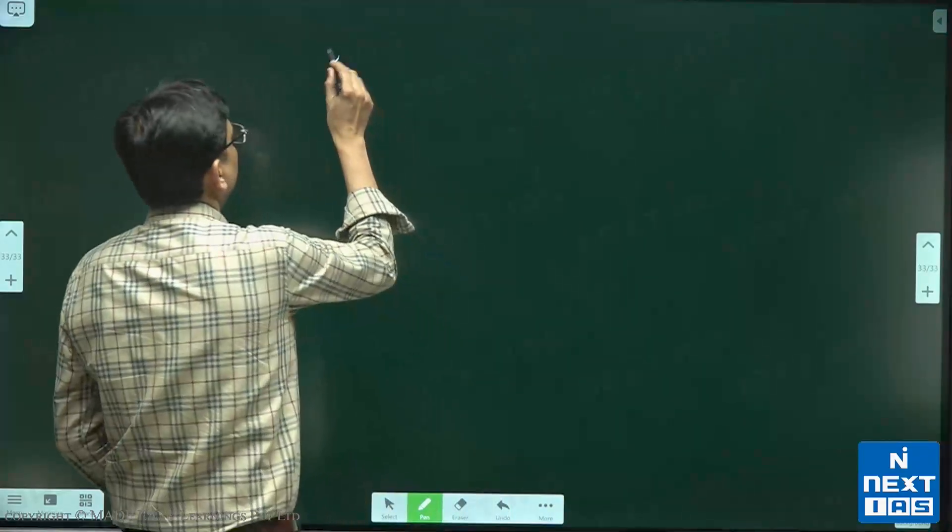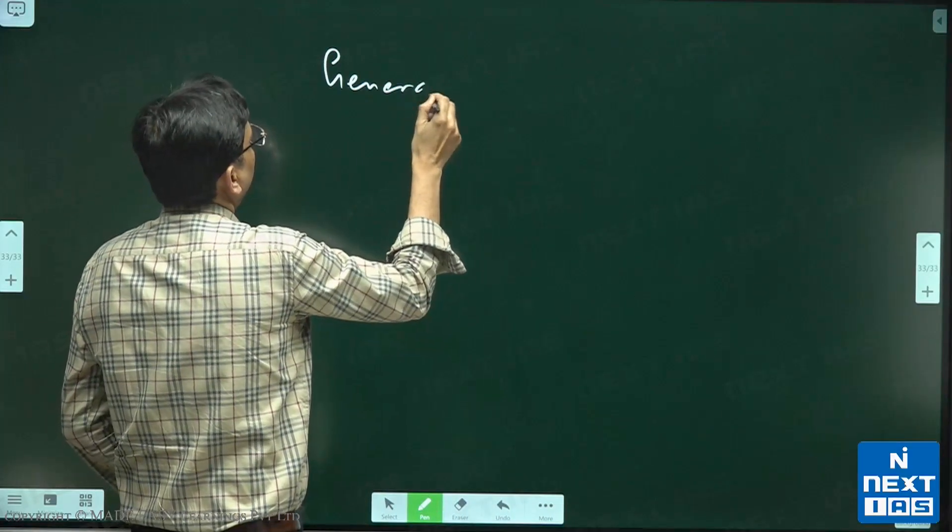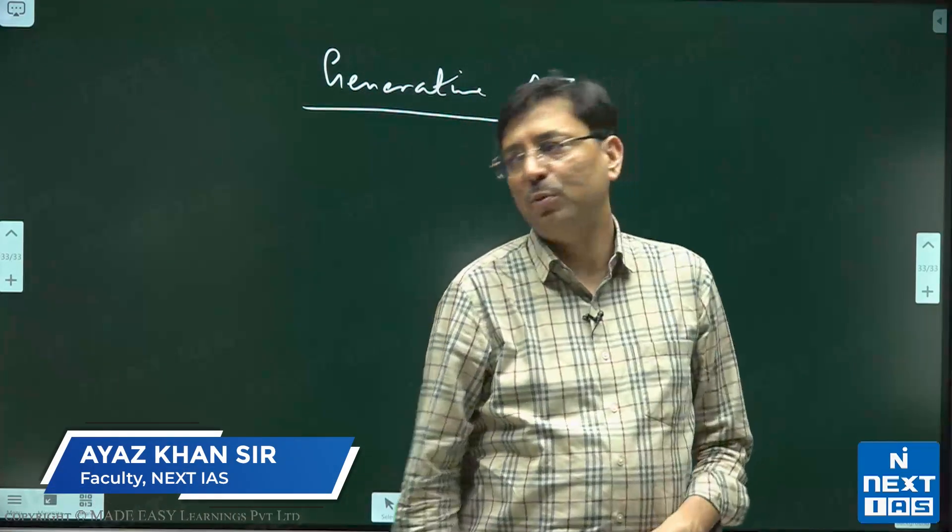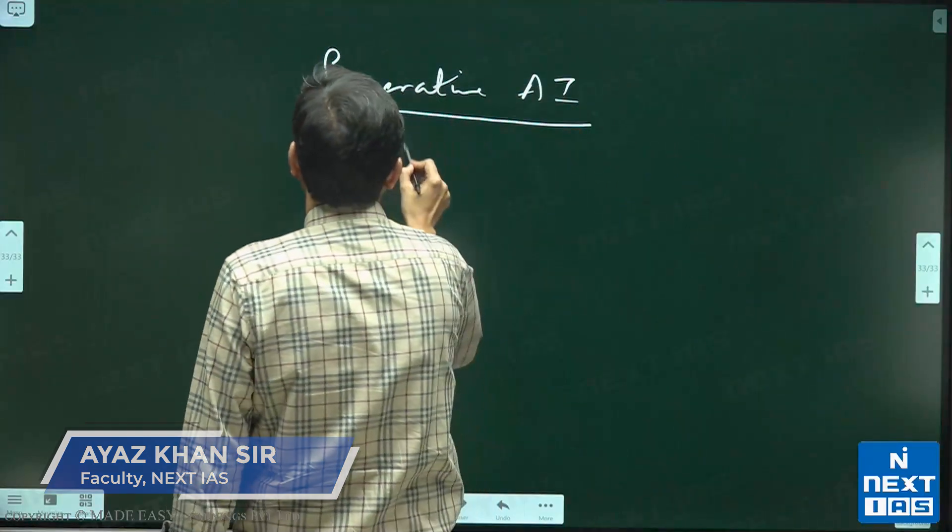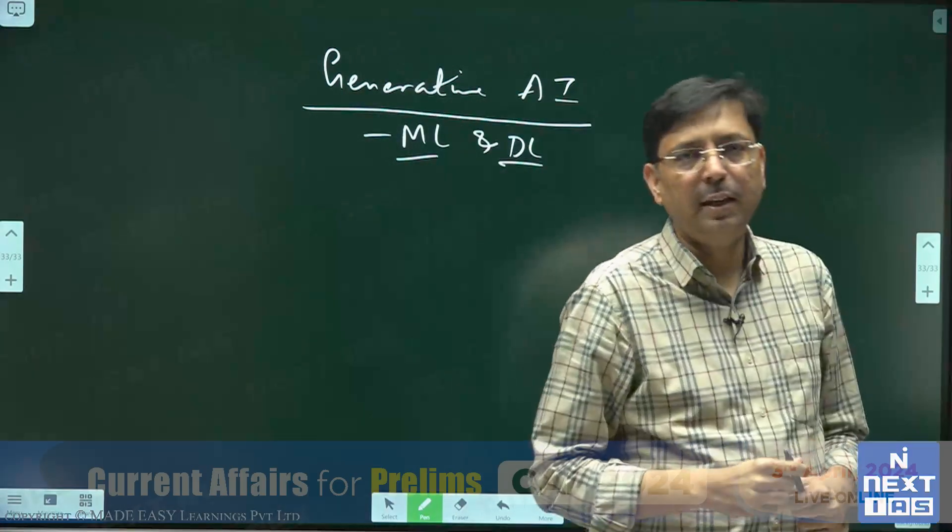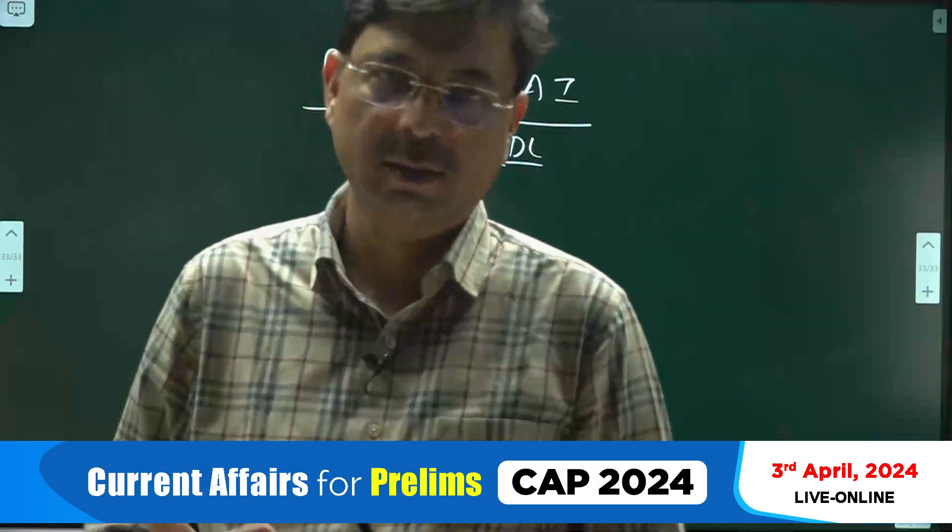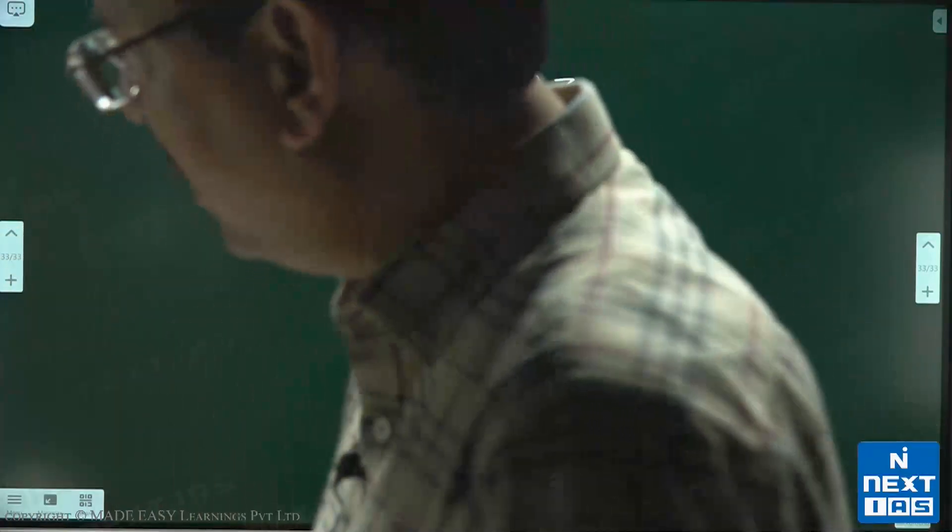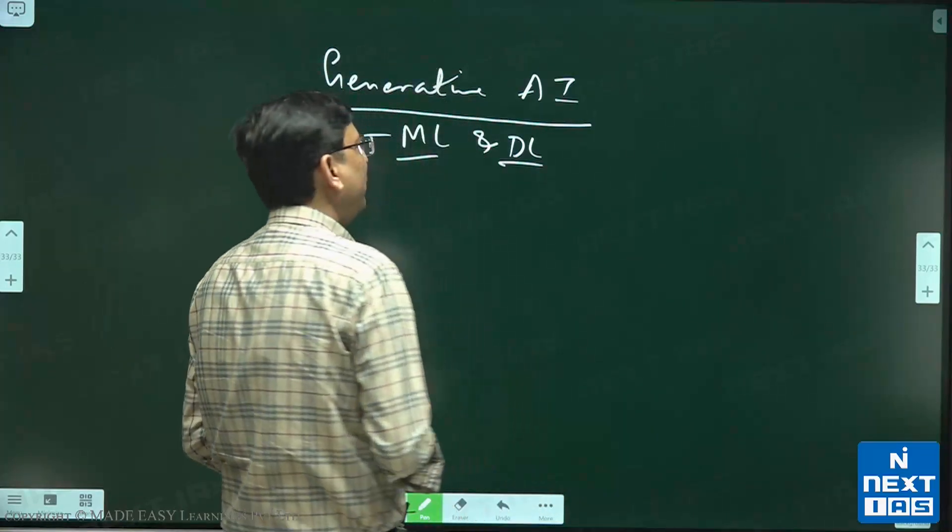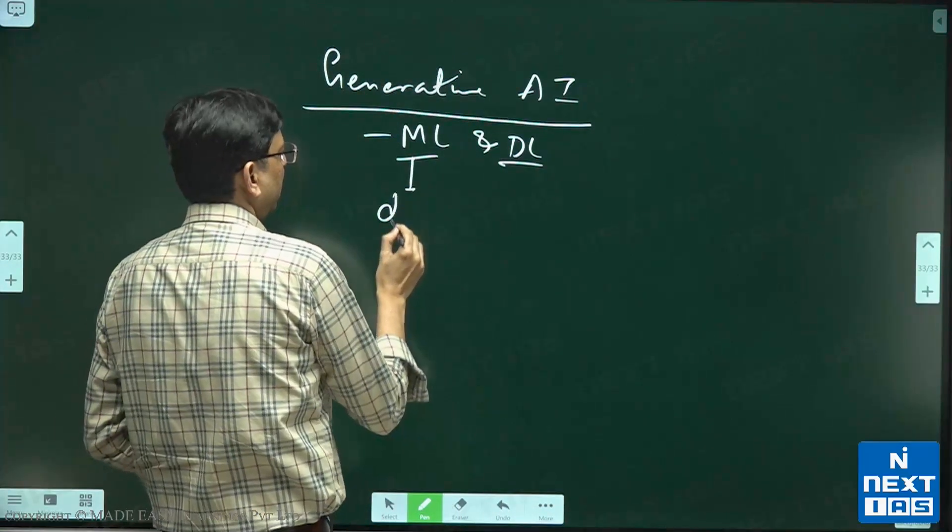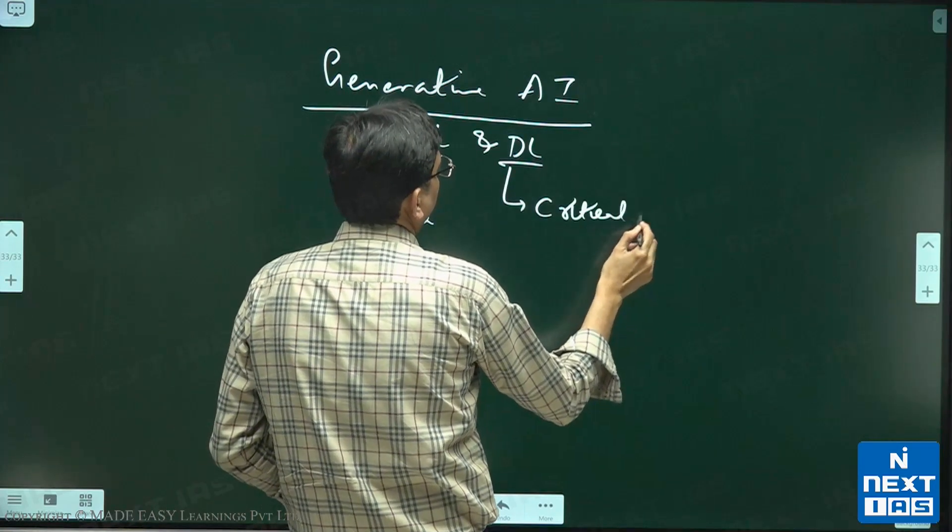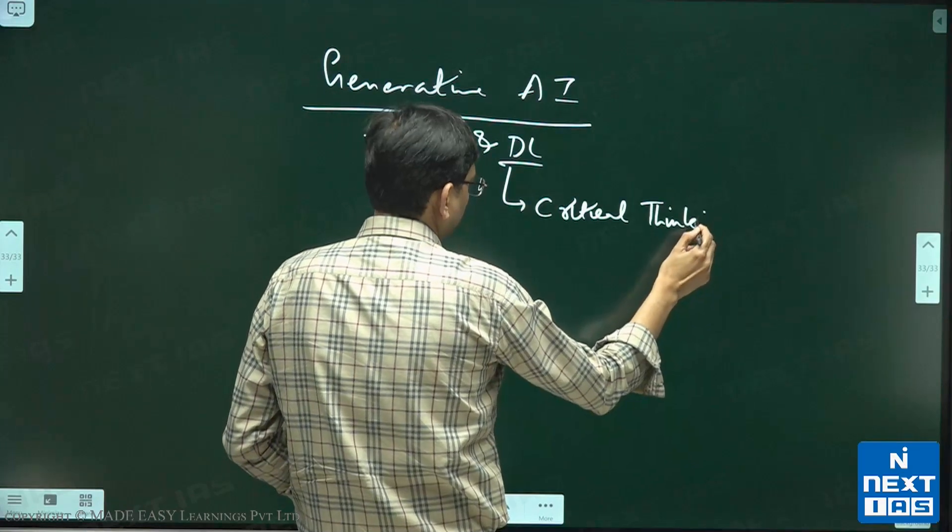If I tell you about generative AI, generative AI uses machine learning and deep learning. Machine learning is learning from data, and deep learning is like critical thinking abilities. This is to learn from data, and this is about critical thinking.